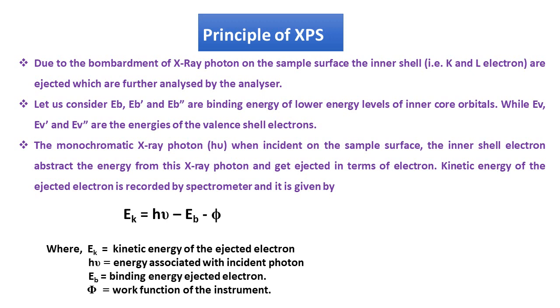Now here, Ek is kinetic energy of the ejected electron. H nu is the energy associated with incident photon. Eb is binding energy of ejected electron, and phi is the work function of the instrument.